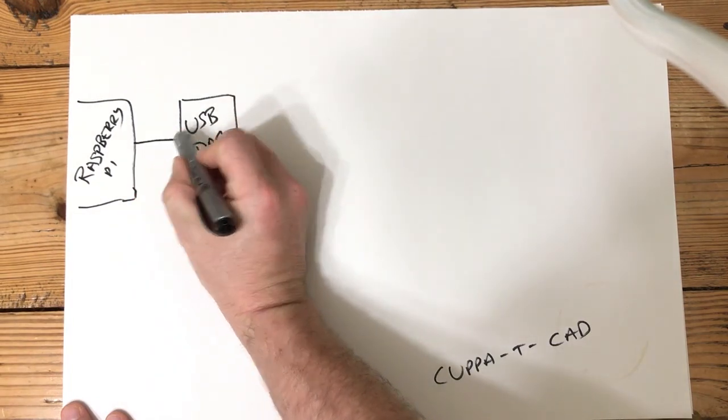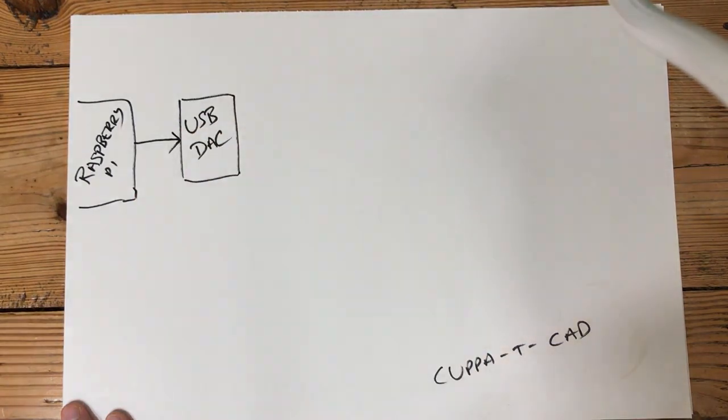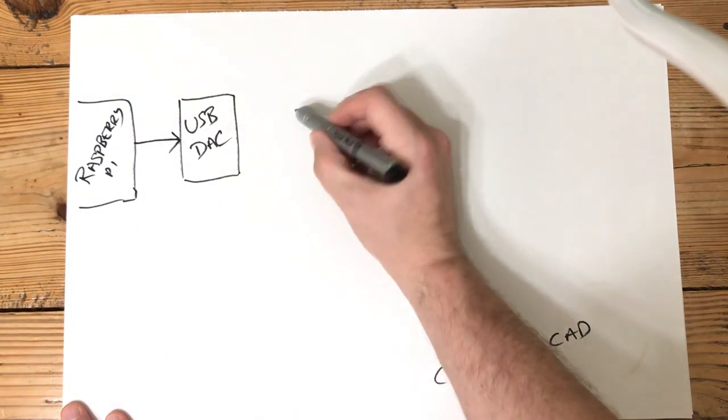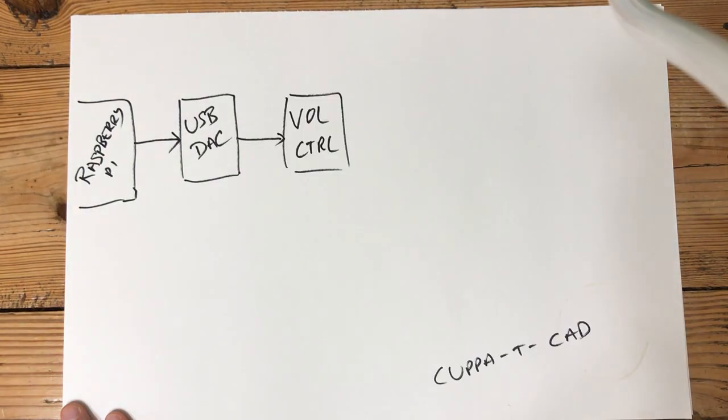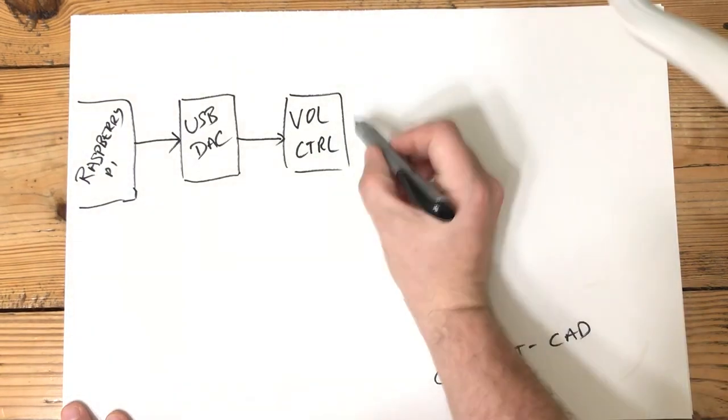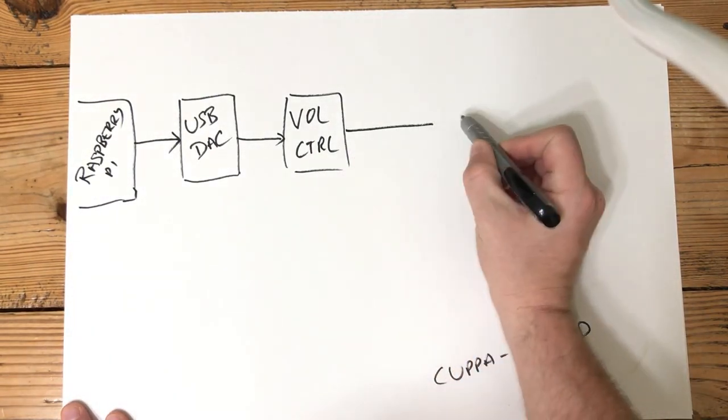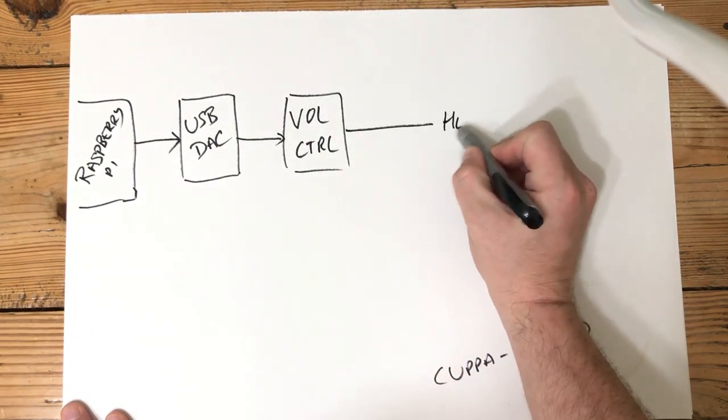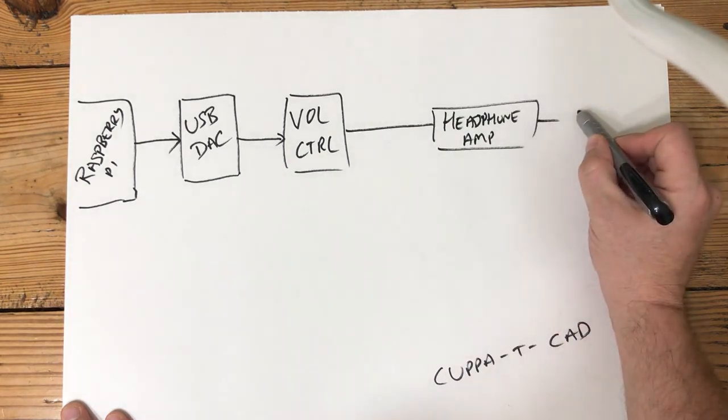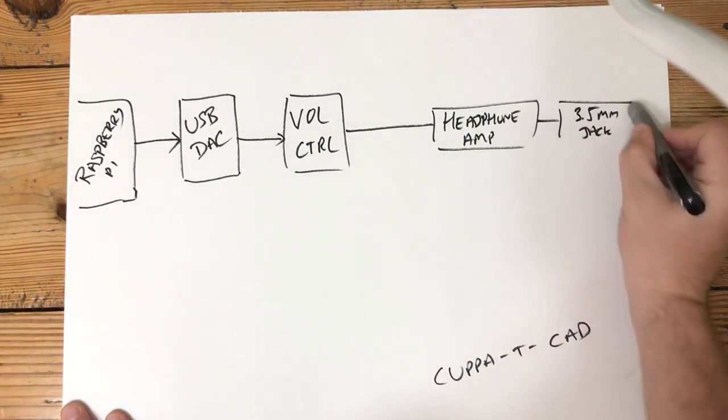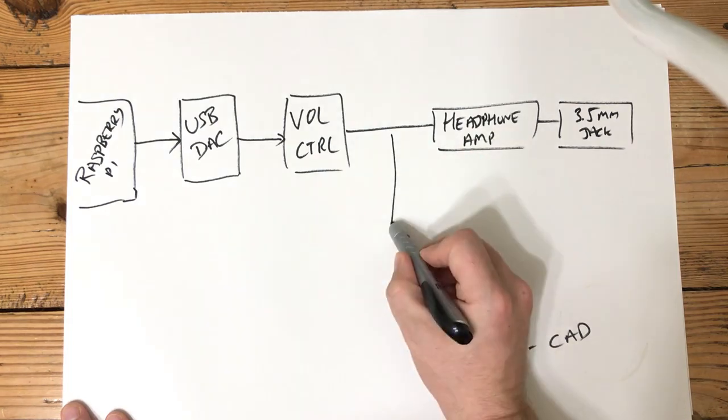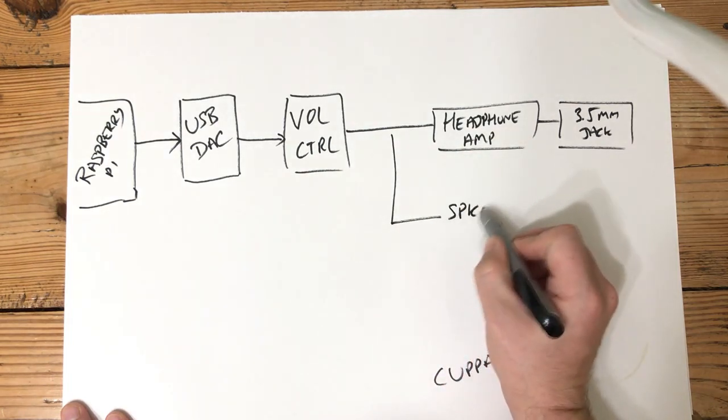So we'll talk about which USB DAC I'll use in just a moment but for now let's assume that I'm going to use a USB DAC. From there I'm going to add a volume control. So we've got the Raspberry Pi, the USB DAC, the volume control and then the signal is going to go two ways. One is going to go into a headphone amp and that'll go into a 3.5mm jack and then the other we need to have a parallel path here that goes into a speaker amp.